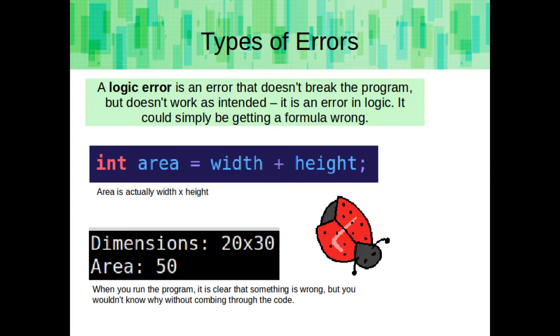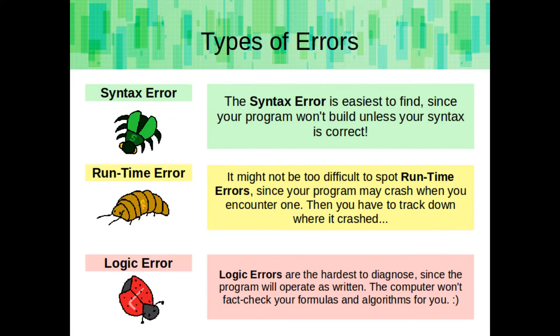For example, the formula for the area of a rectangle is width times height, but here we've coded it as width plus height. When you run the program you can tell something's wrong, but then you have to go track it down in your code. The syntax error is easiest to find since your program won't build unless syntax is correct. A runtime error may not be too difficult to spot since your program may crash, but you still have to track down where and why. Logic errors are the hardest to diagnose, since the program operates as written and the computer won't fact-check your formulas and algorithms for you.